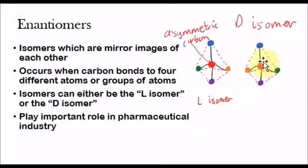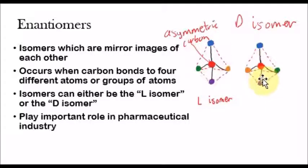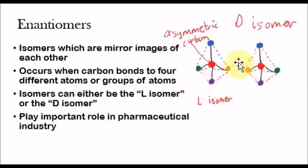If you see here, they look like mirror images of each other — just like how your hands look exactly the same but are mirror images of each other. In the same sense, these two molecules are exactly the same but are mirror images of each other. Whenever the atoms are arranged like this, it's called the L-isomer. And whenever you have the atoms arranged like this, it's called the D-isomer.